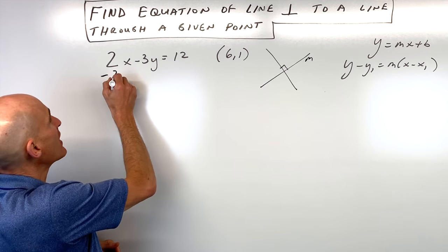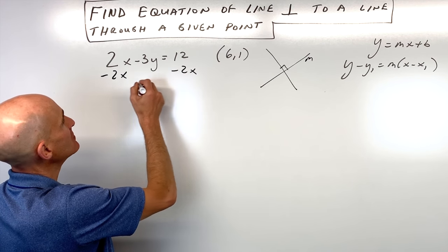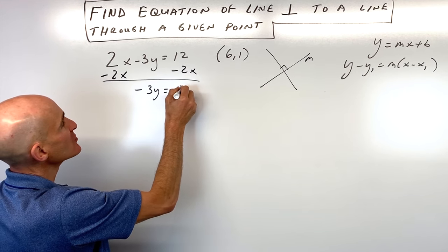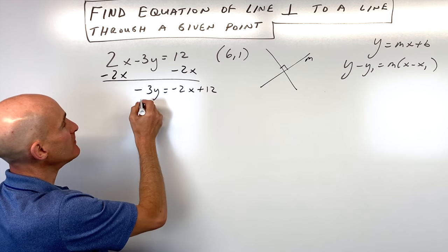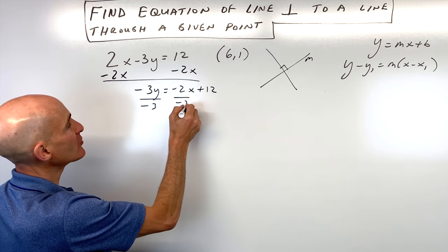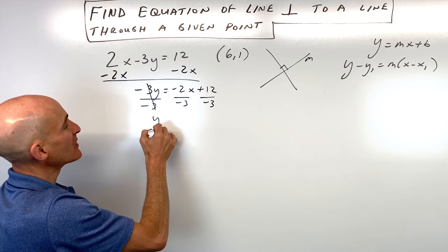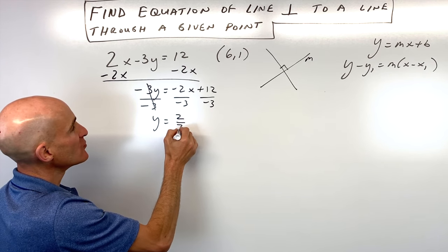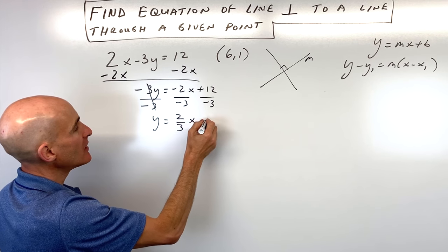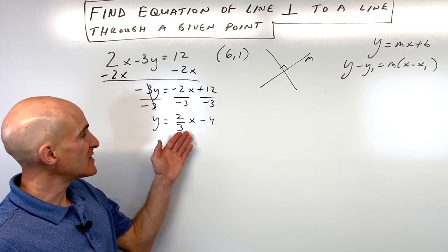We're going to subtract 2x from both sides of the equation. That gives us negative 3y equals negative 2x plus 12. We're going to divide everything by negative 3 to get y by itself. That gives us y equals positive 2 thirds x minus 4, because the two negatives cancel.